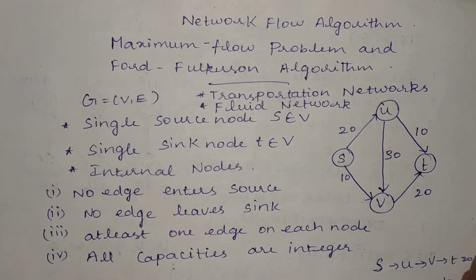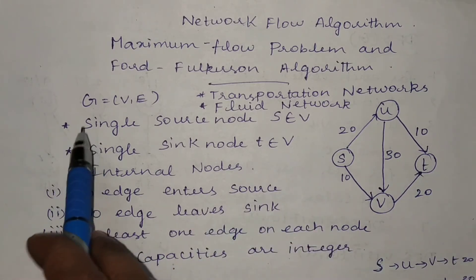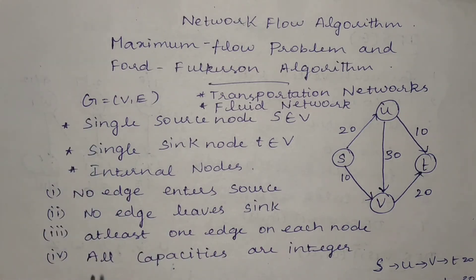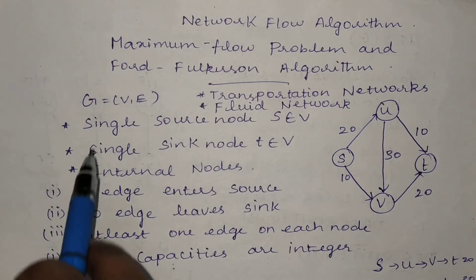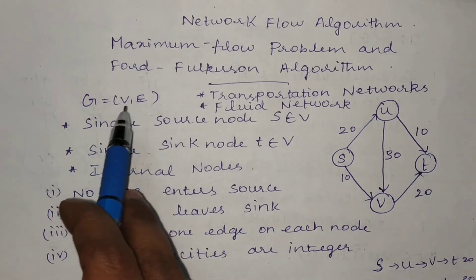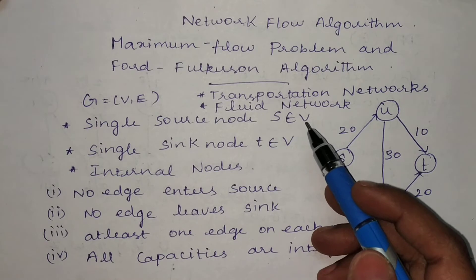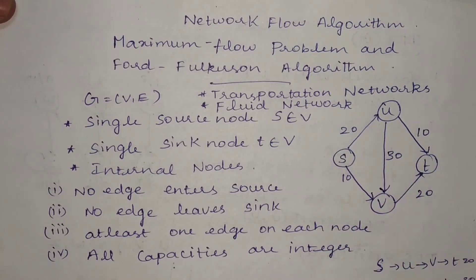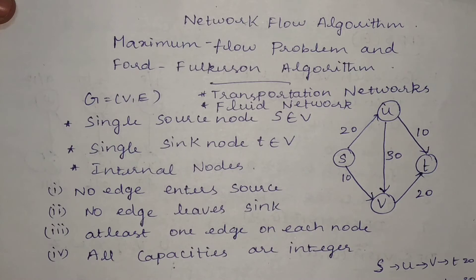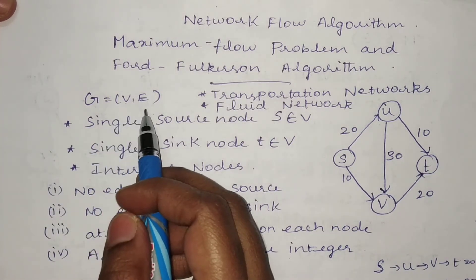The problem input is a directed graph G consisting of vertices V and edges E. Two real-time examples for this problem are transportation networks and fluid networks. A transportation network is used to transport data across a network. A fluid network treats the medium as a pipe through which data is sent. We can relate this problem to those examples. This graph consists of vertices and edges.